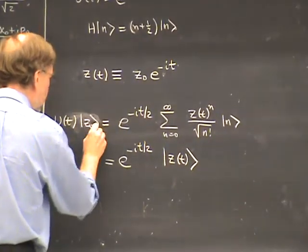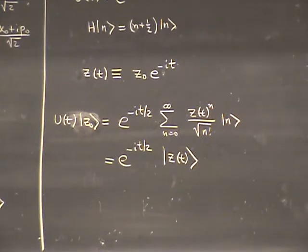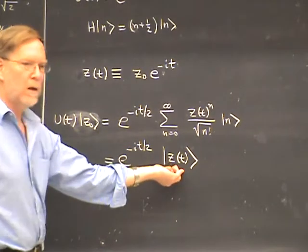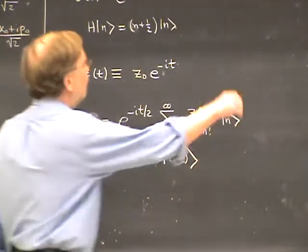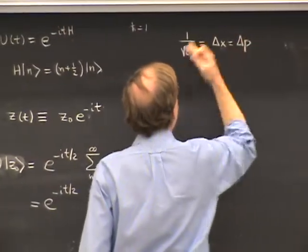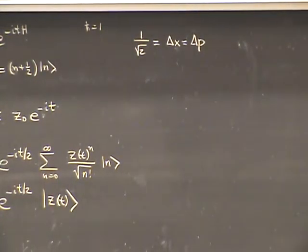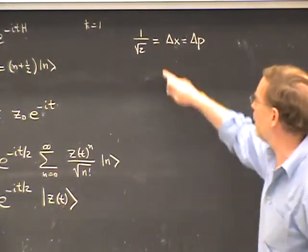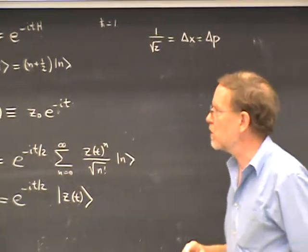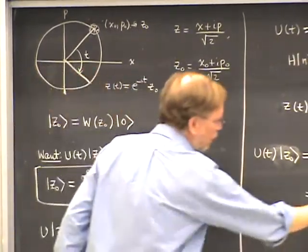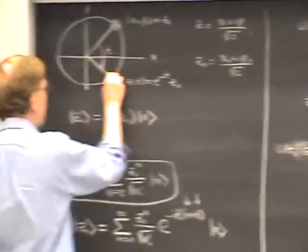So U(t) acting on the initial state |Z₀⟩ equals this time-evolved state in quantum mechanics. What you see is that it is proportional to the coherent state — it's a phase factor times the coherent state. That means the minimum uncertainty condition, delta x equals delta p equals 1 over root 2, which defines a coherent state, is preserved: a coherent state remains a coherent state. These dispersions don't change. The wave packet neither spreads nor contracts — it stays at the same delta x and delta p. But its center, its expectation values, move and exactly follow the classical motion.